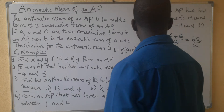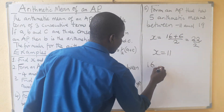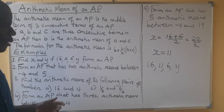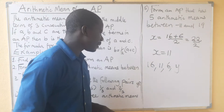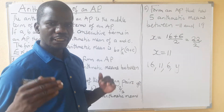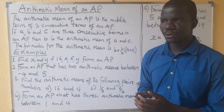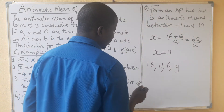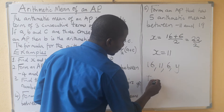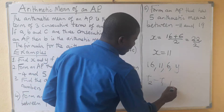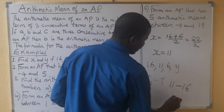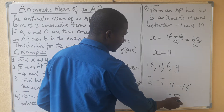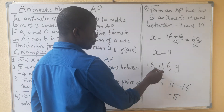Now we have 16, 11, 6, and Y. We are only remaining with Y. We can find Y by first finding the common difference. The common difference is T2 minus T1, which is 11 minus 16, giving us negative 5. So we add negative 5 each time to get the next term.